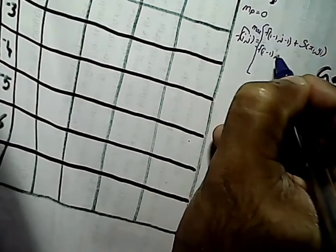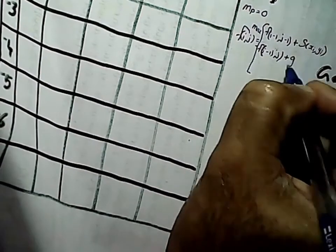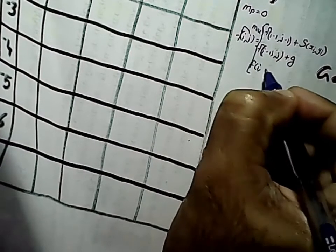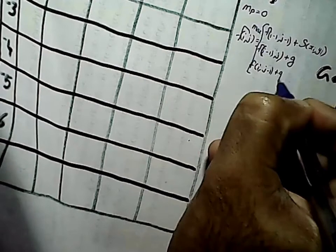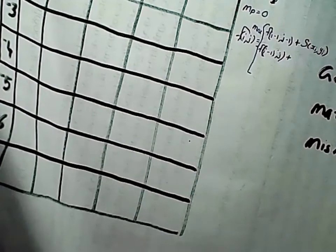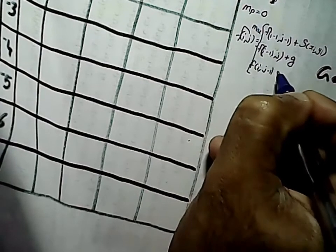The second possibility is we can take the value from the left, i.e., F(i-1, j) and then add the gap penalty. The third possibility is we can take the value from above, i.e., F(i, j-1) and then add the gap penalty. Then we have to take the maximum of these three values to fill the cell.